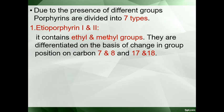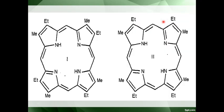Classification of porphyrins: due to the presence of different groups, porphyrins are divided into seven types. The porphyrin ring has no groups attached; after attachment of different groups, different types of porphyrin are created. The first is etioporphyrin 1 and 2. It contains ethyl and methyl groups, differentiated on the basis of changes in groups at positions 7, 8, 17, and 18. Here you can see the methyl group is attached in type 1, whereas ethyl group is present in type 2.